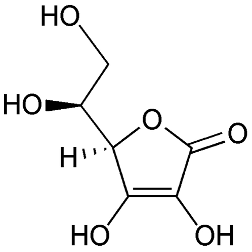A good example is the reaction between hydrogen and fluorine, in which hydrogen is being oxidized and fluorine is being reduced: H₂ + F₂ → 2HF. We can write this overall reaction as two half-reactions — the oxidation reaction: H₂ → 2H⁺ + 2e⁻, and the reduction reaction: F₂ + 2e⁻ → 2F⁻. Analyzing each half-reaction in isolation can often make the overall chemical process clearer.